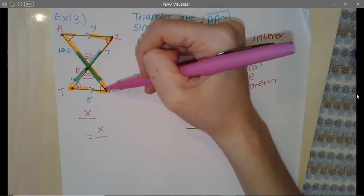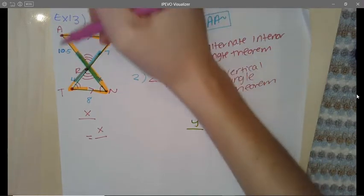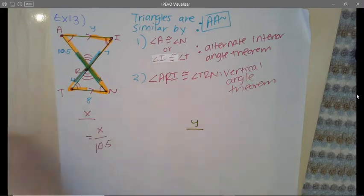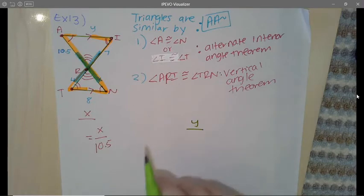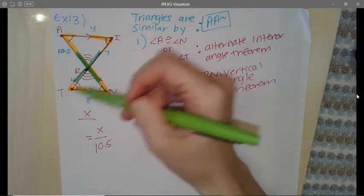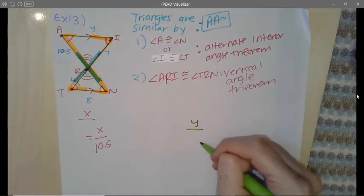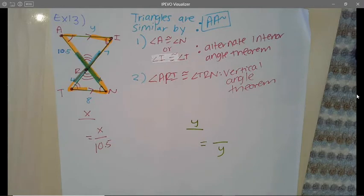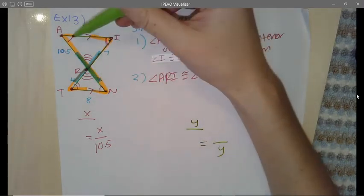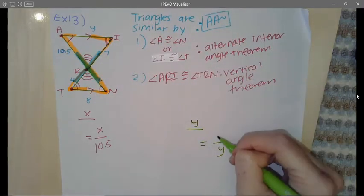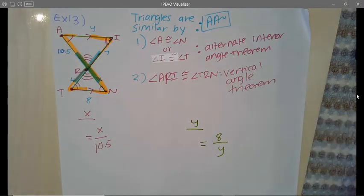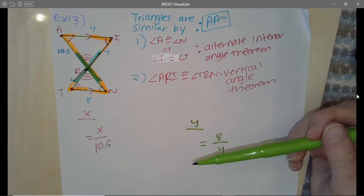I'm just going to set it up with the X first. So X is in between my three arc and my one arc, so which side over here is in between the three arc and the one arc? That is correct, that would be my 10.5. And the Y is in between my one arc and my two arcs. Now to keep consistent, my X started from my bottom triangle, so I need to start from my bottom triangle this time. The Y was in the top triangle, which means it's going to go in my denominator, and my bottom triangle, the side that's in between the one and the two arcs, is the 8.